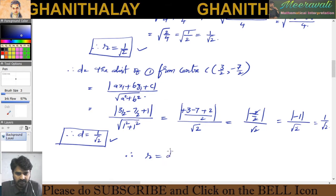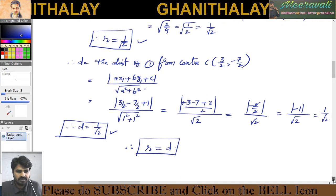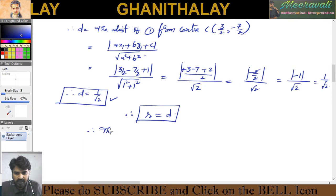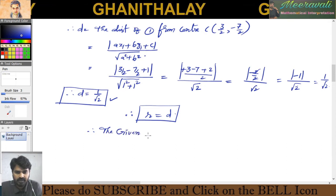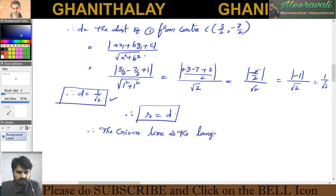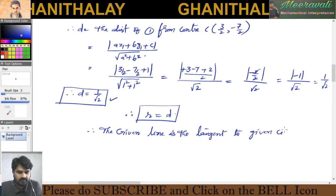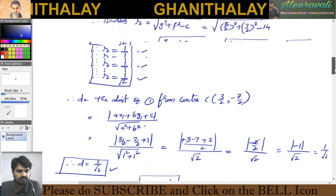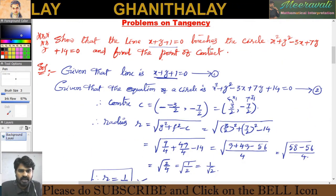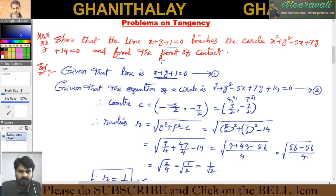Since r is equal to d, hence the line is tangent to the given circle. We have proved that this line touches the circle. Now we need to find the point of contact.